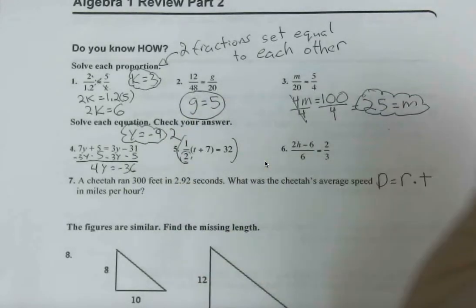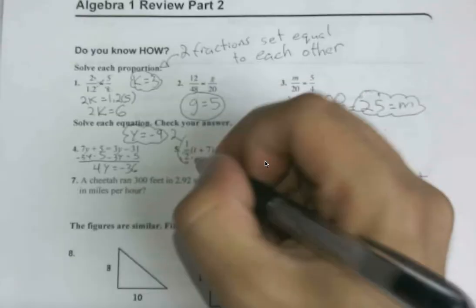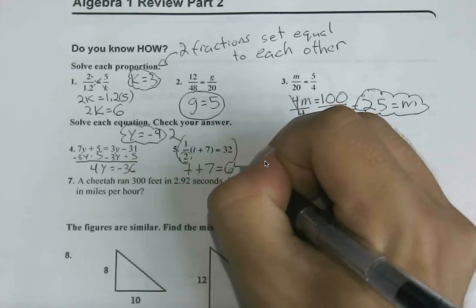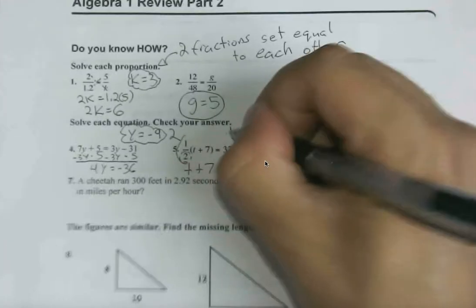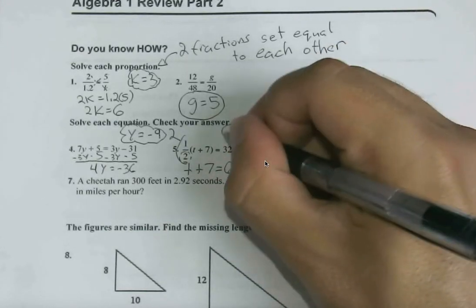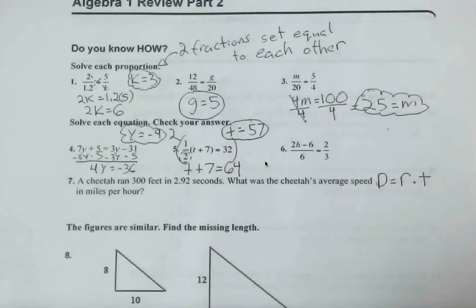So I'll just put parentheses around it and have 2 there. We're left with t plus 7, and this equals now 64. If we solve for t, t is now equal to 57. And we can always check our work on this.